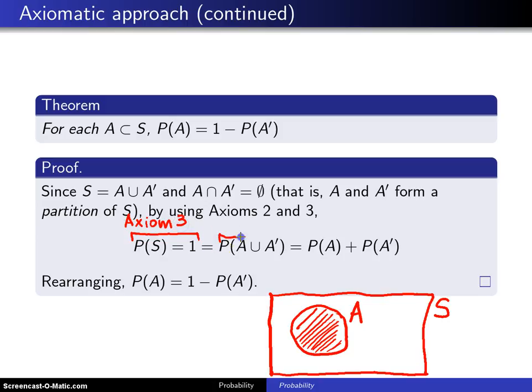How about this one right here? Well, since A and A prime are disjoint events, then their union can be found by adding up the two individual probabilities, and that's exactly axiom 2.